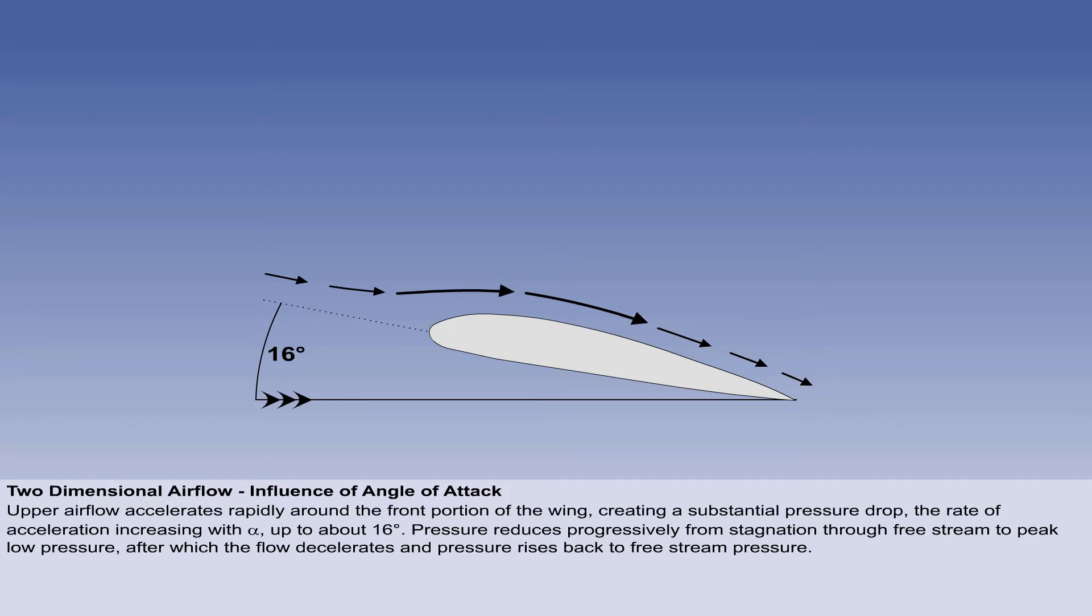The pressure reduces continuously from stagnation value, through free stream pressure, to a position on the top surface where a peak value is reached. From there, the airflow decelerates progressively, and the pressure rises back to free stream near the trailing edge.